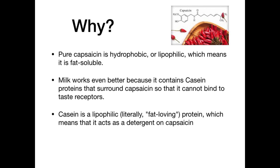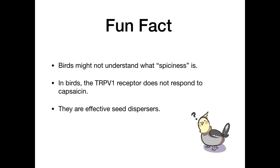Note that casein is present in animal milk but not in vegetable milk. You could try out this experiment at home if you're interested in verifying the result. Since we've learned all about TRPV1 receptors and spiciness, here's a fun fact: birds might not understand what spiciness is. In birds, the TRPV1 receptor does not respond to capsaicin. This might be because capsaicin only selectively discourages vertebrate predators without deterring more effective seed dispersers. In other words, the reason why peppers do not affect birds might be that birds could help spread their seeds.